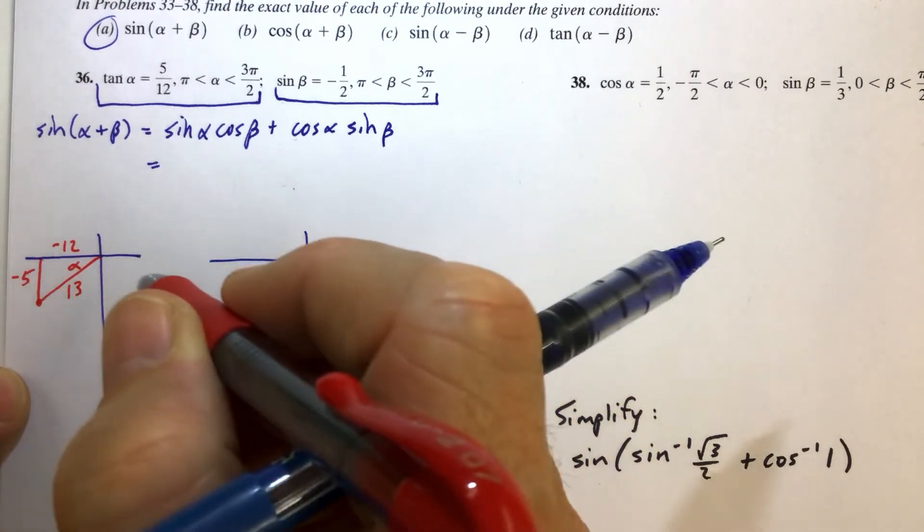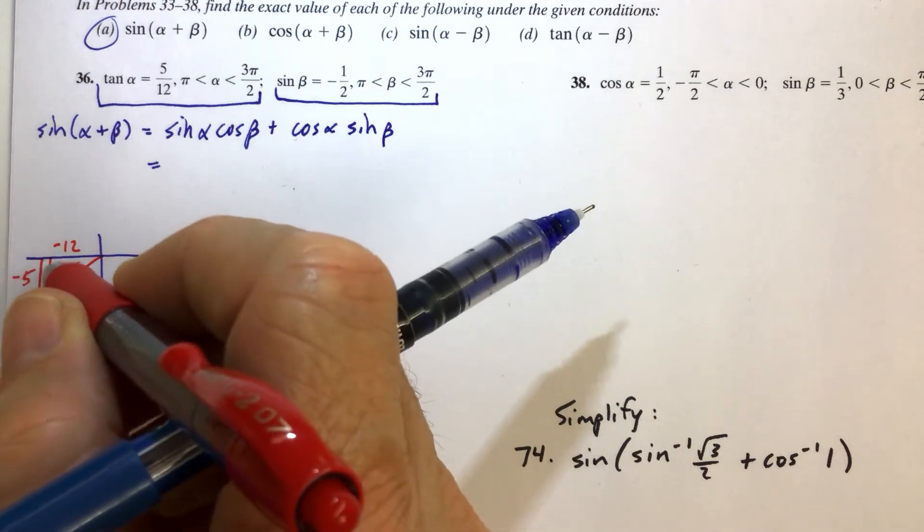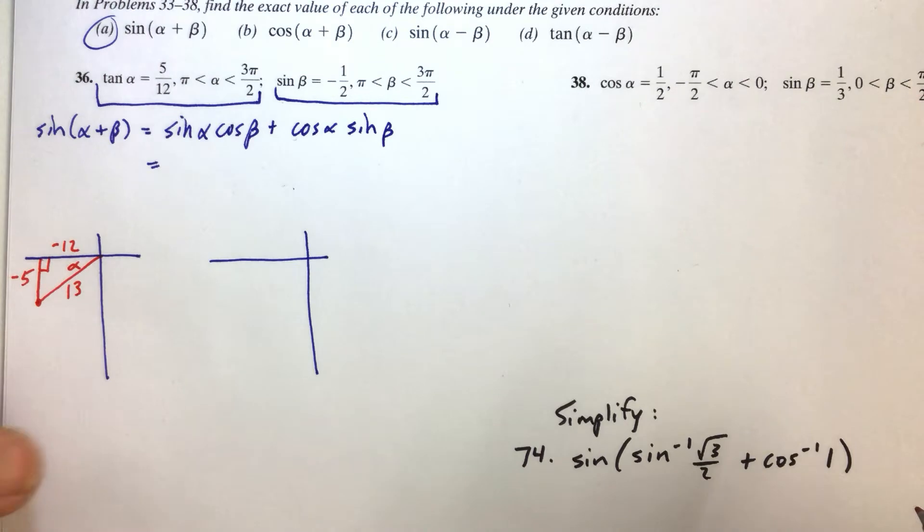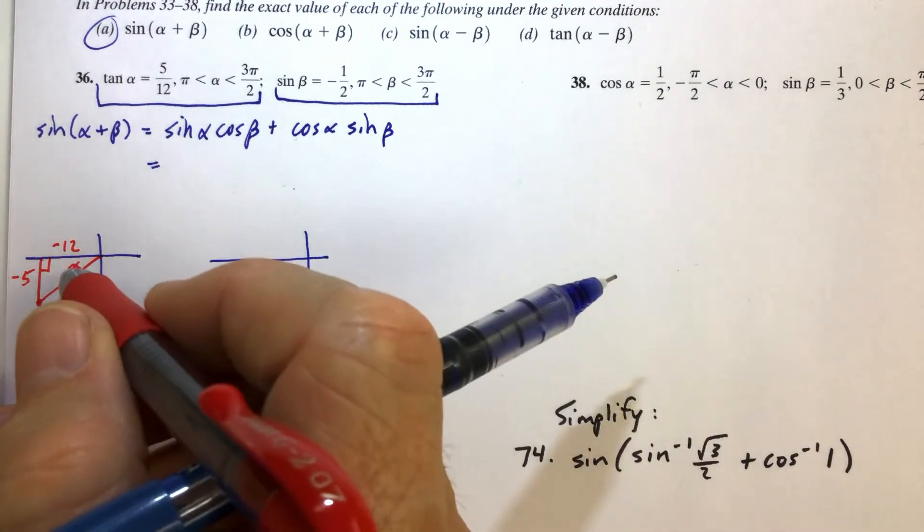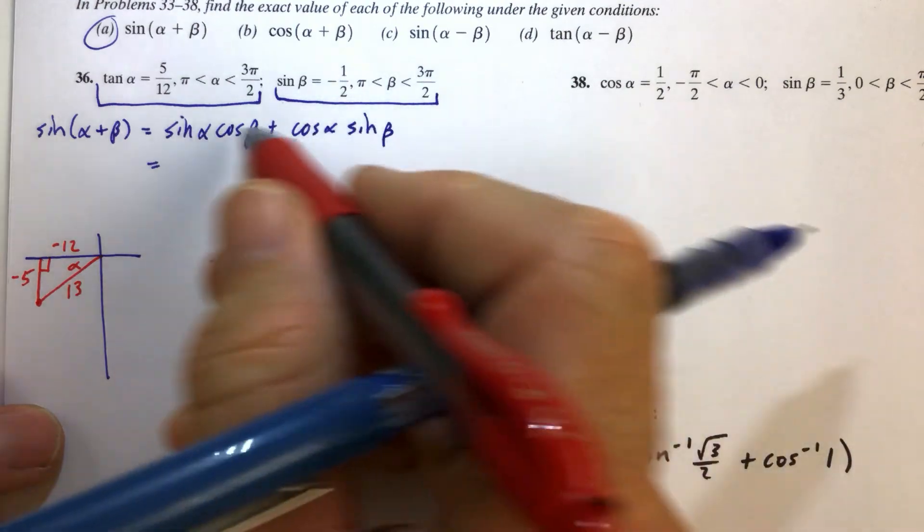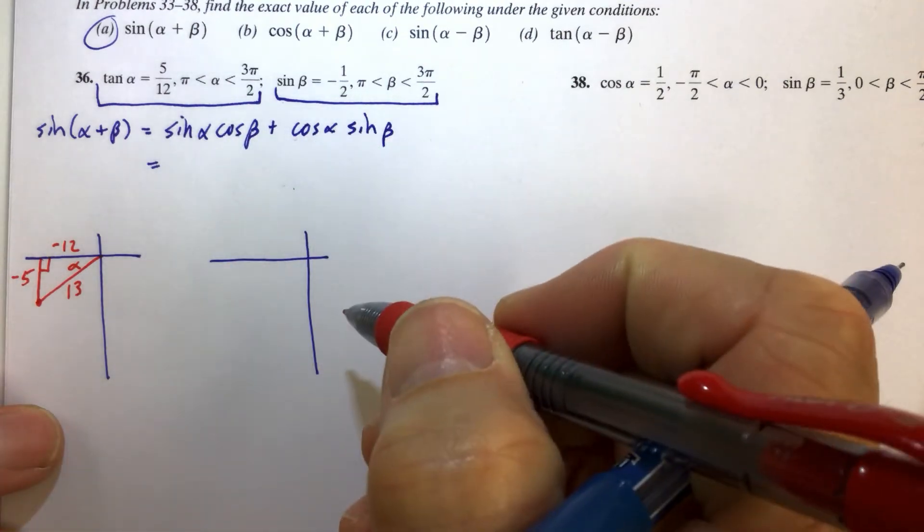So building our triangle, we hopefully by now remember that the 5, 12, 13 is a Pythagorean triple. So now we can, having this picture here really helps us to get what values we need and put them in this expression.